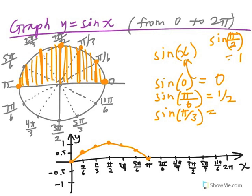The y value at seven pi over six is negative one-half. The y value at four pi over three will be negative radical three over two. That's just a little bit before negative one.